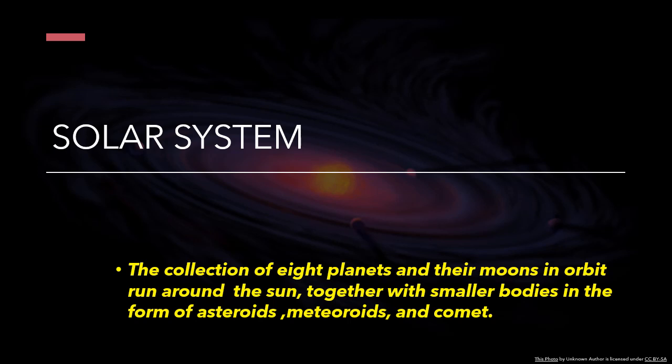Our solar system consists of our star, the sun, and everything bound to it by gravity. The planets Mercury, Venus, Earth, Mars, Jupiter...